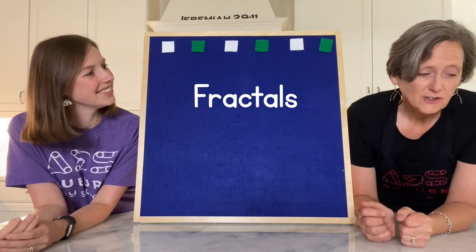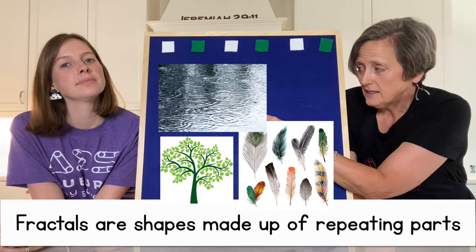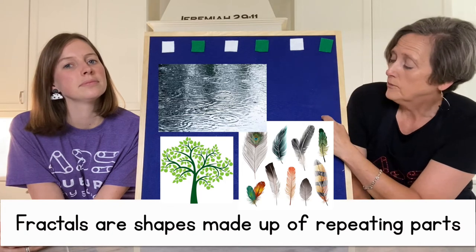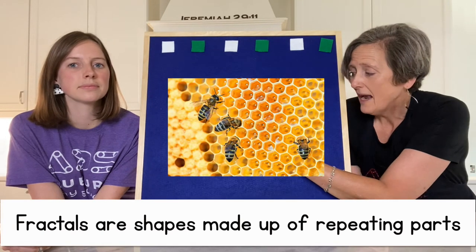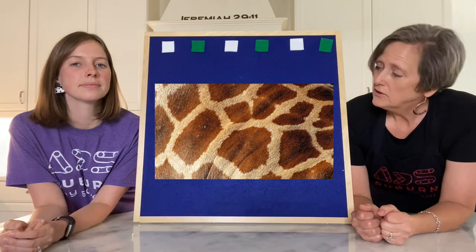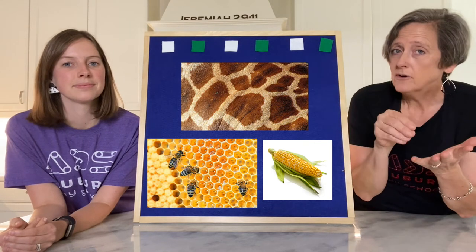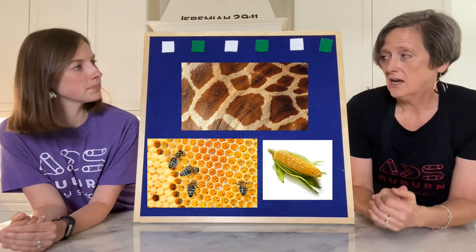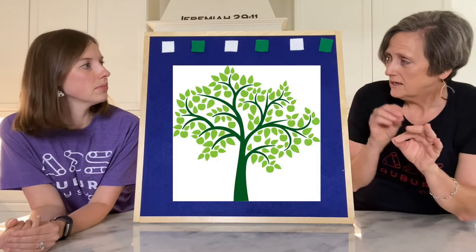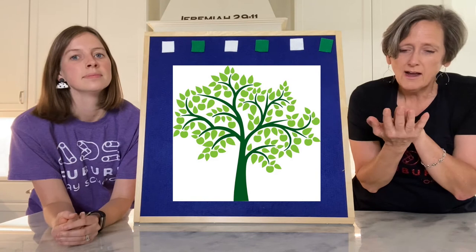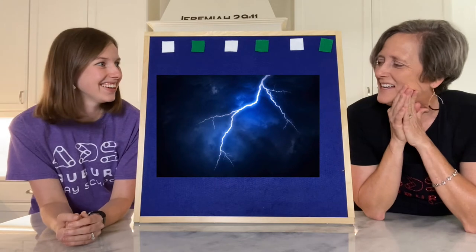Fractals are shapes made up of repeating parts, like the tree branch, the feather, the ripple. But it's also like a honeycomb, giraffe skin, or corn on the cob — all of those things are big shapes made up of repeating shapes. There are also fractals that branch out, like a tree branch. And there are other things too, like lightning — lightning does branch out a lot.